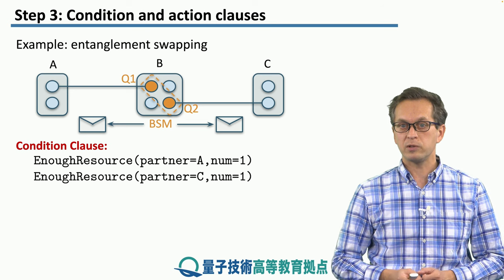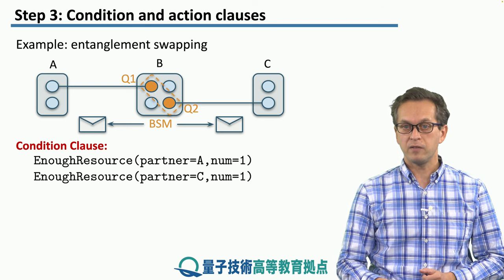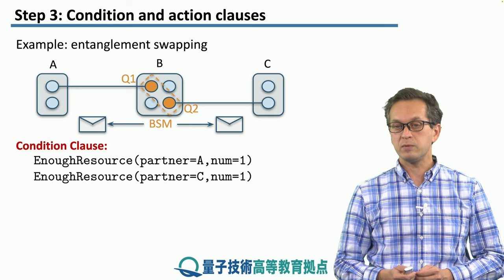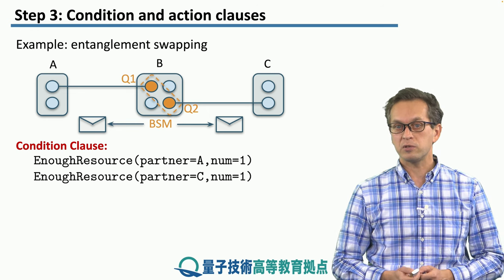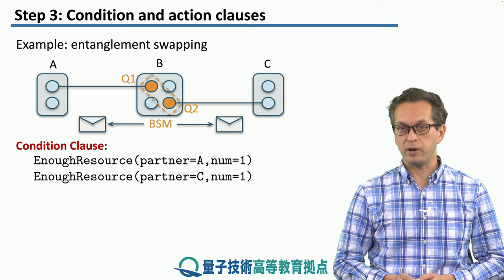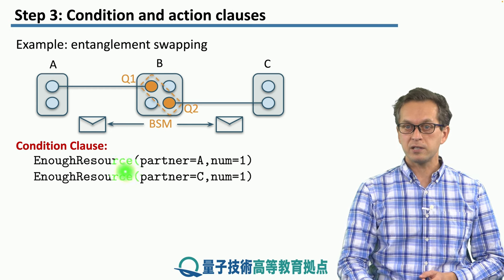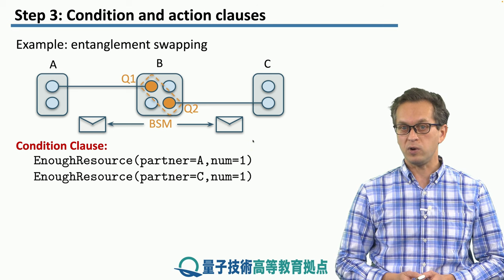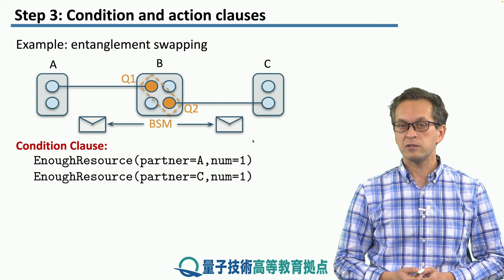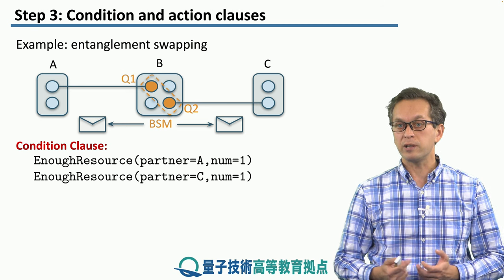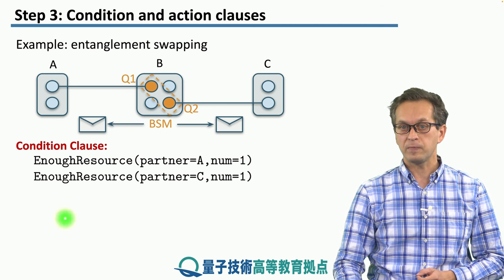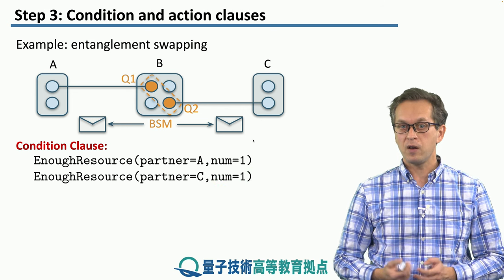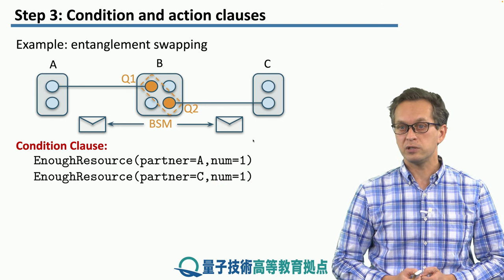So the condition clause would look something like this. First, node B needs to check whether it's sharing enough resources with node A. As we said, and as the picture shows, we only need a single bell pair. So the partner address is set to A, and the number, which gives us the threshold number of bell pairs, is set to 1. Similarly, it needs to share a single bell pair, or at least one bell pair, with node C. So we set the partner address to C, and threshold number to 1. Once these two conditions are satisfied, the action is triggered.